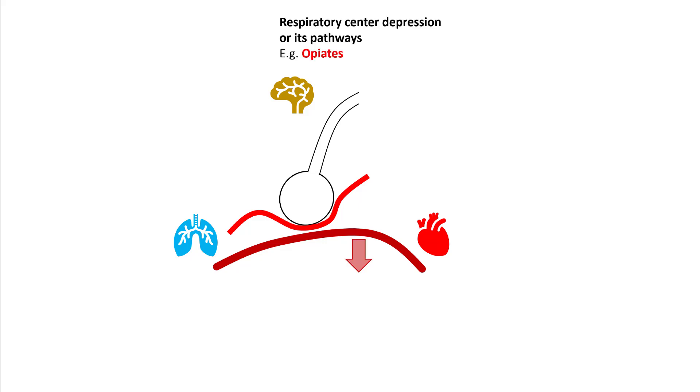Whenever you see a patient with hypoxemia, think about three main organ systems: brain, lungs, and heart. The major reason for respiratory center depression is opiates, so ask your nurse about its use.